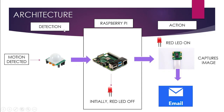In this architecture, detection is carried out by the PIR motion detection sensor and the Raspberry Pi runs a Python script that checks the PIR sensor in a loop. As soon as motion is detected, the following actions are performed: the red LED is switched from off to on state, an image of that timestamp is captured and saved to the project directory, and the same image is sent via email using SMTP — specifically Gmail. If there is no motion, the red LED remains in its off state.